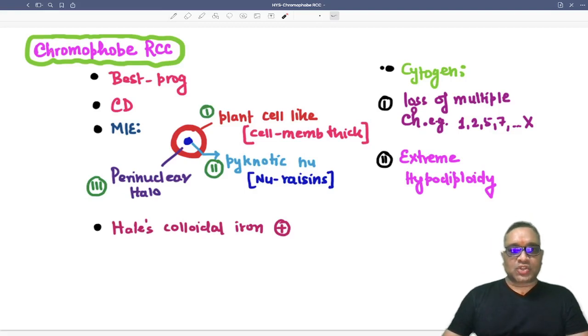Hello everyone, in this Hilding Shorts, I am going to tell you about chromophobe type of renal cell carcinoma. They have the best prognosis and arise from the collecting duct.